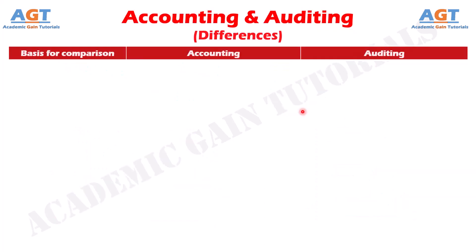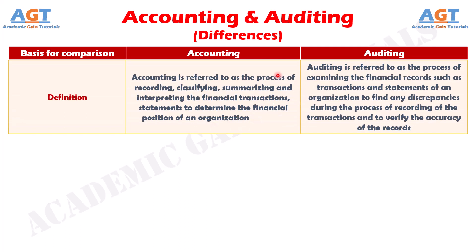So let's look into the basic differences between accounting and auditing in a tabular form. Difference number one: Accounting is referred to as the process of recording, classifying, summarizing, and interpreting the financial transactions and statements to determine the financial position of an organization. Whereas auditing is referred to as the process of examining the financial records to find any discrepancies and to verify the accuracy of the records.